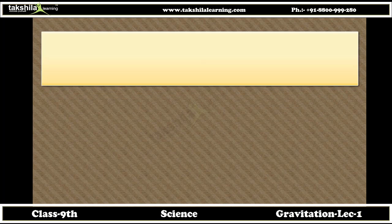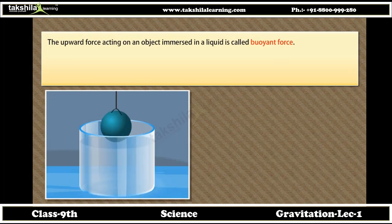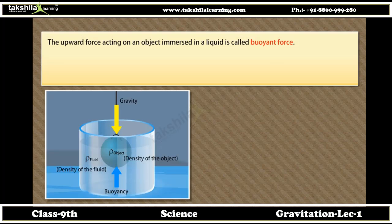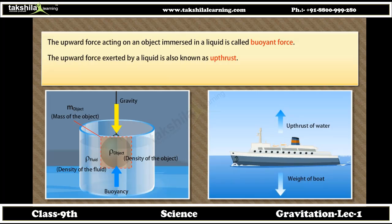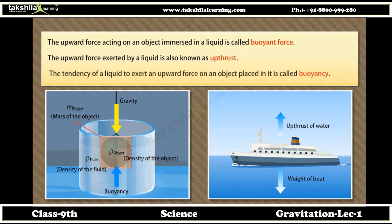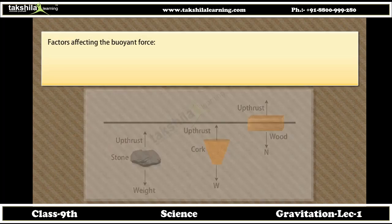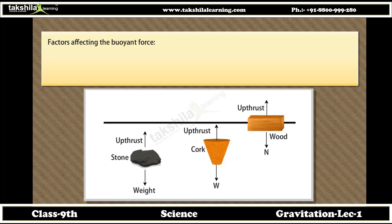Buoyancy: the upward force acting on an object immersed in a liquid is called buoyant force. The upward force exerted by a liquid is also known as upthrust. The tendency of a liquid to exert an upward force on an object placed in it is called buoyancy. Factors affecting the buoyant force: it depends upon the volume of the solid object immersed in the liquid and the density of the liquid.